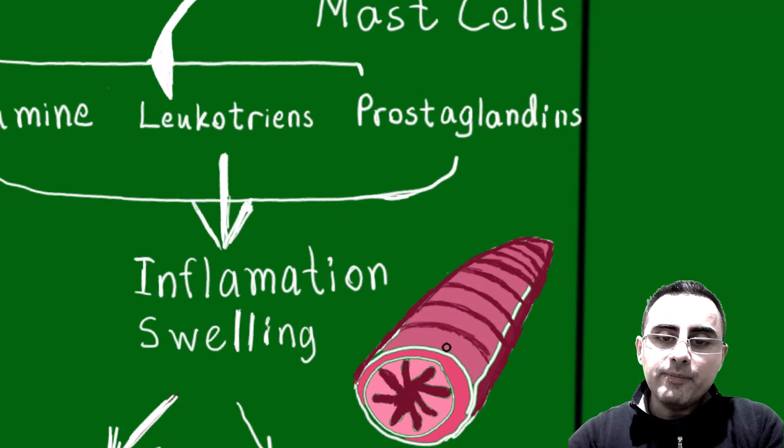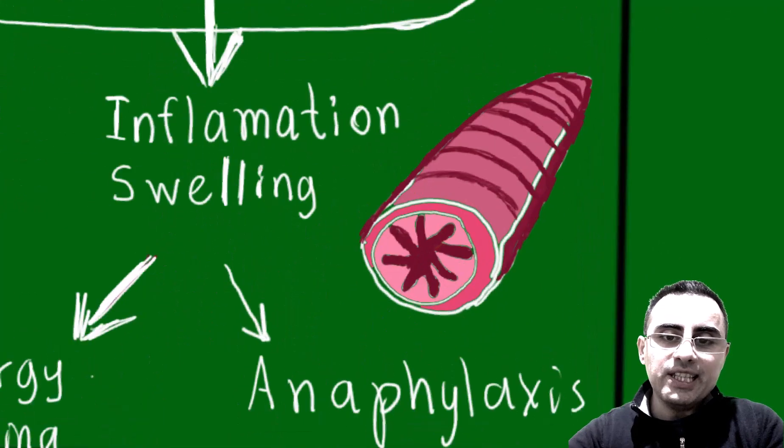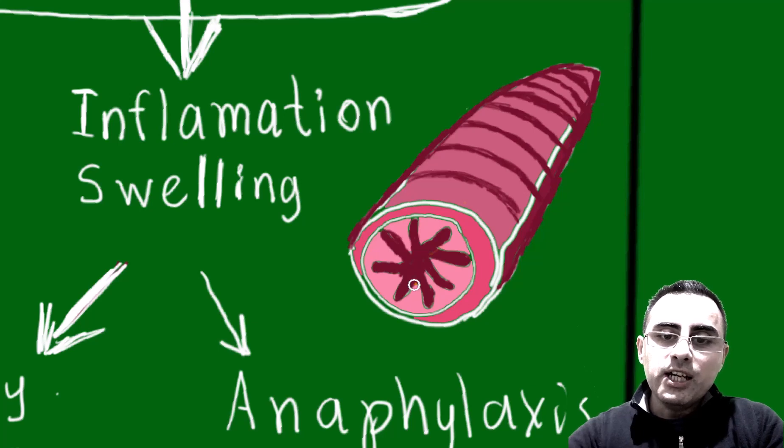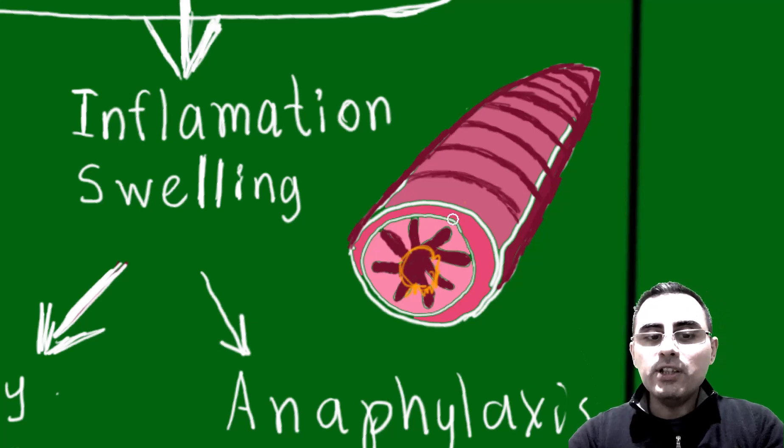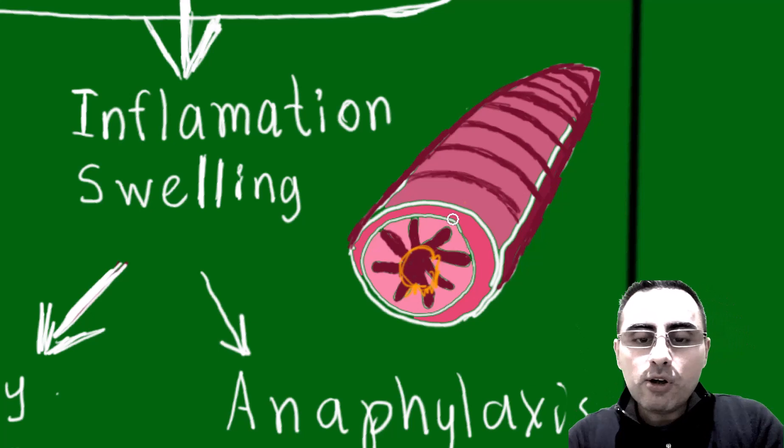In the bronchi, bronchial inflammation causes swelling of the wall and narrowing of the bronchi, as you can see here. It causes wheezing, coughing, and breathing difficulties.